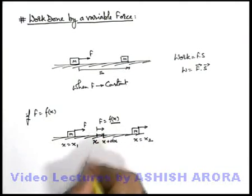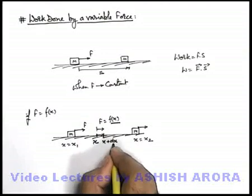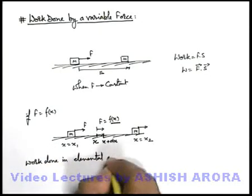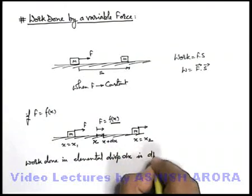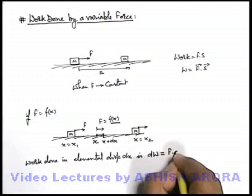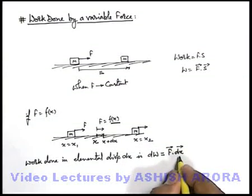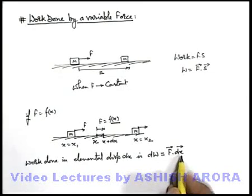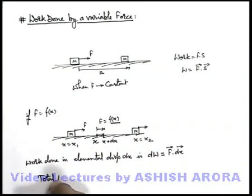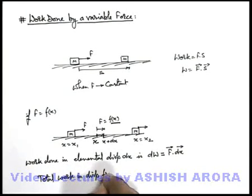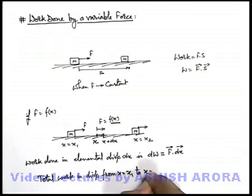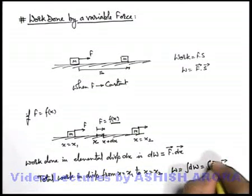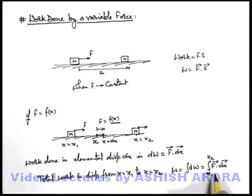So we can say in this elemental displacement, some work can be calculated as F into dx. The work done in elemental displacement dx is dW, and this dW can be written as F·dx. This is the work done by the force in displacing the body at position x by a very small elemental displacement dx. So if we wish to calculate the total work done in displacement from x equal to x₁ to x equal to x₂, this total work can be written as integration of dW, or integration of F·dx within limits from x₁ to x₂, because we are displacing the body from x₁ to x₂.